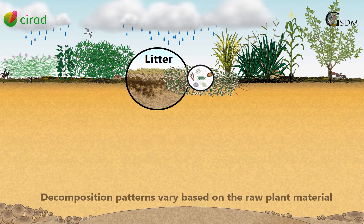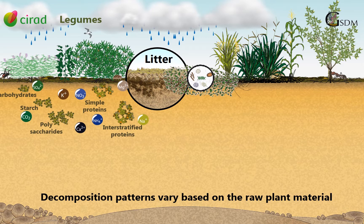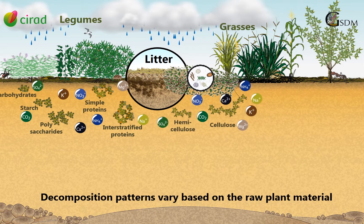Decomposition patterns vary based on the raw plant material. Leaves from legumes are rich in nitrogen and soluble compounds, such as simple carbohydrates and proteins. They are quickly decomposed and mineralized by the soil microflora. Leaves, and more particularly stems from grasses, have a lower nitrogen content with higher cellulose content, which makes them decompose and mineralize more slowly.